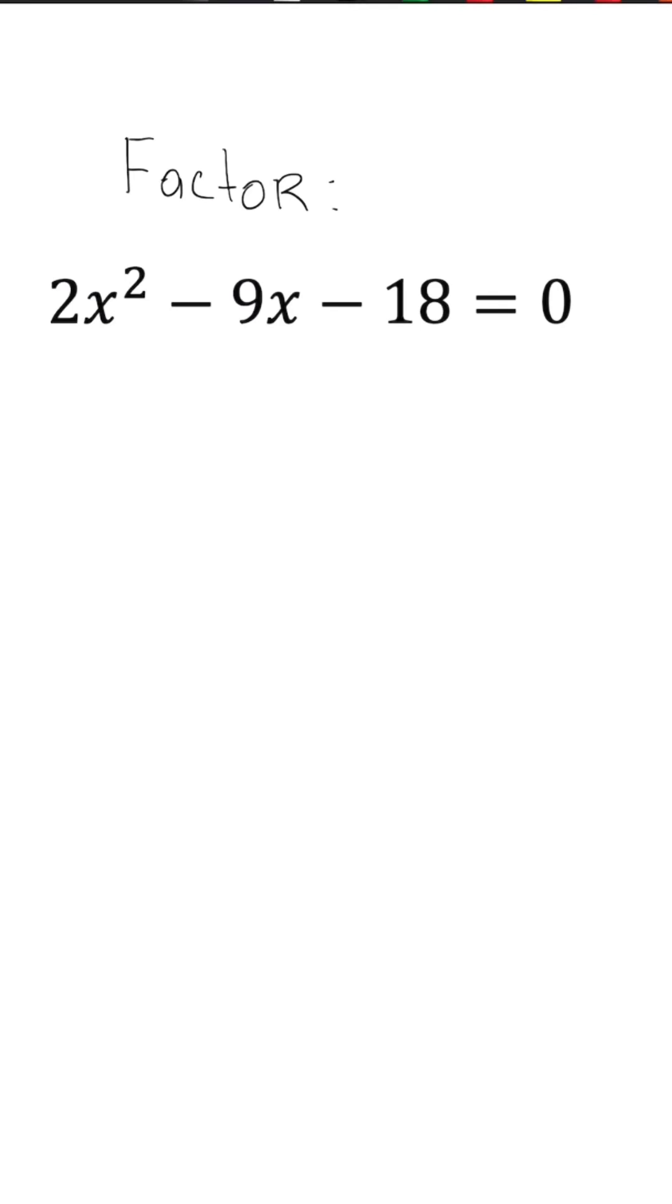I want us to factor the following quadratic equation, and we could do this by the AC method and grouping. So if we multiply A and C, we're going to get negative 36, and we know whatever factors we use, they're going to add to give us a negative 9.